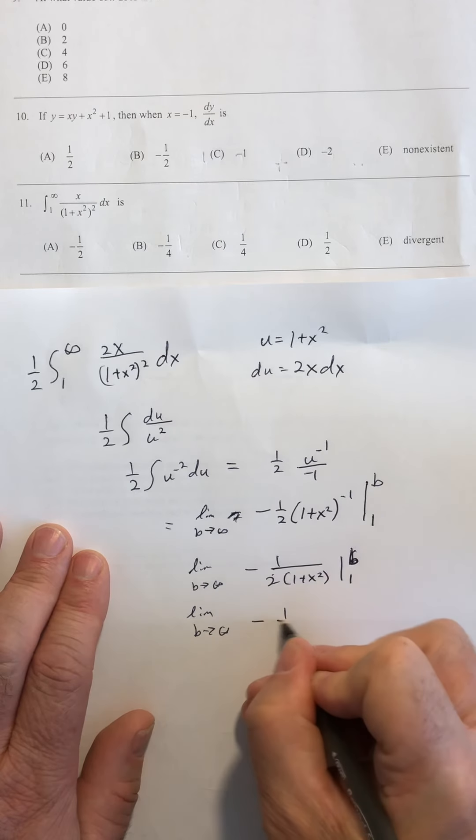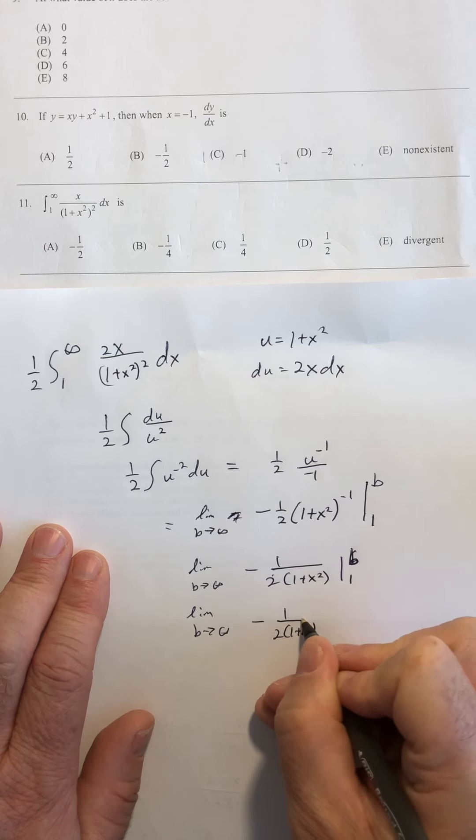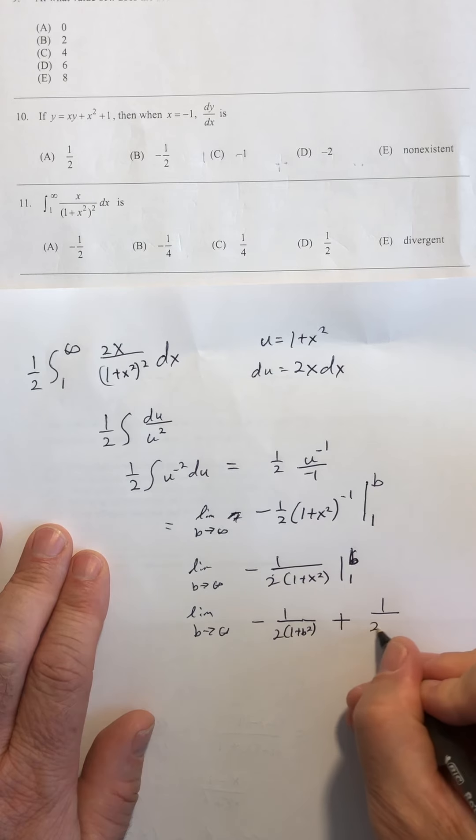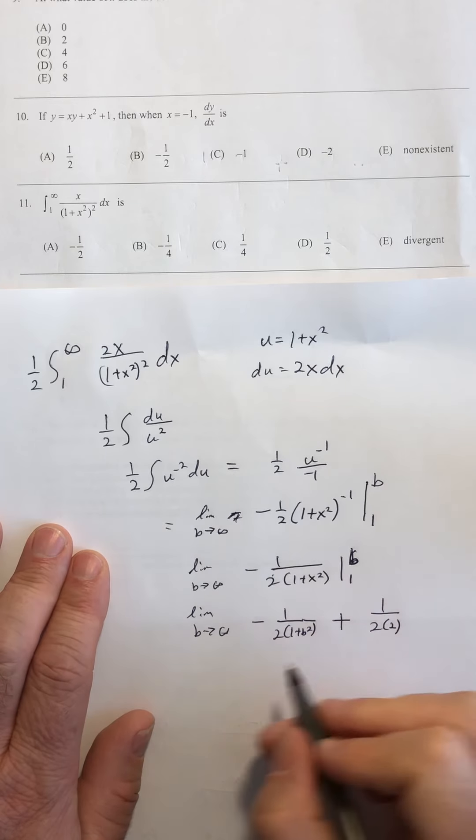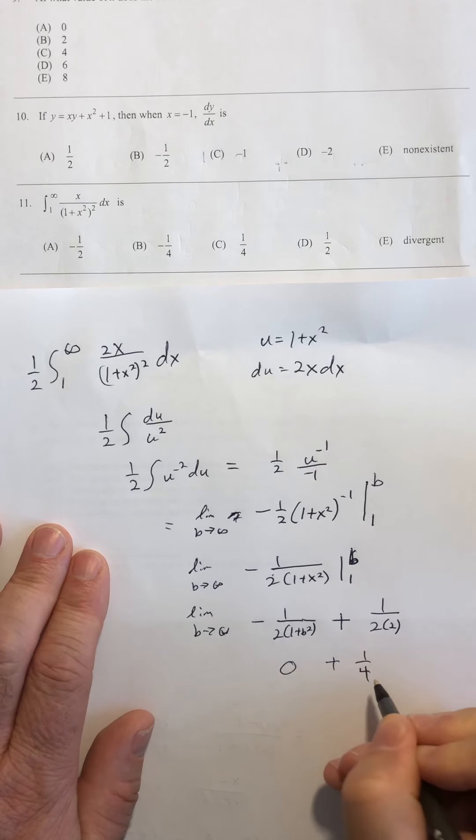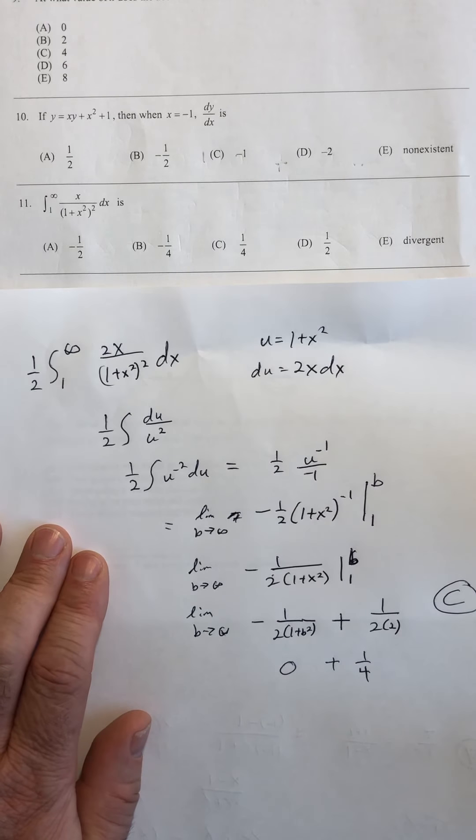I've got negative 1 over 2 times 1 plus b squared, and then minus a negative, so that's going to be plus 1 over 2 times 2. And as b goes to infinity, this term will go to 0, and I get 1 fourth c. Looks like our answer for 11.